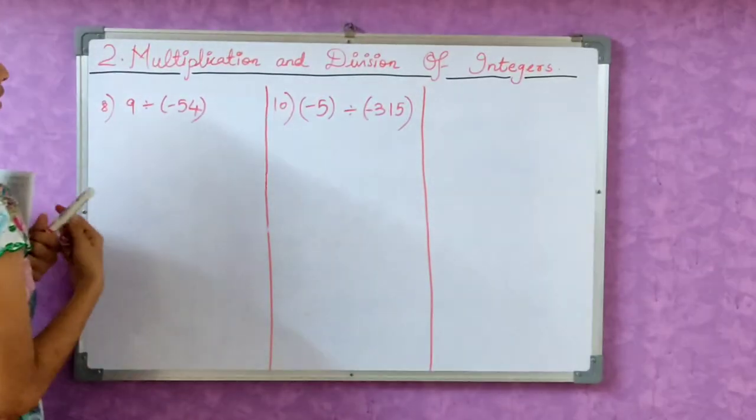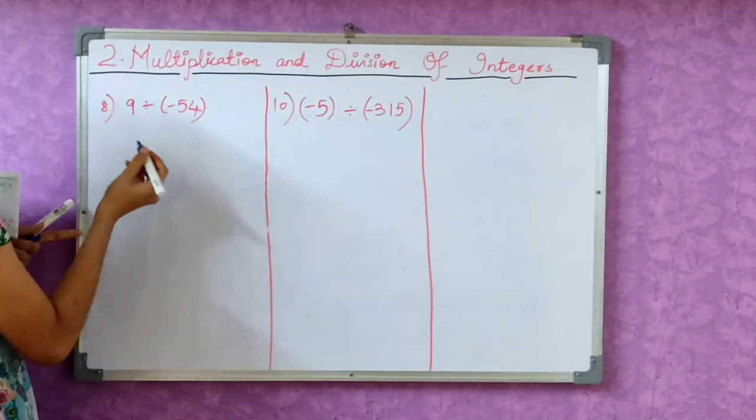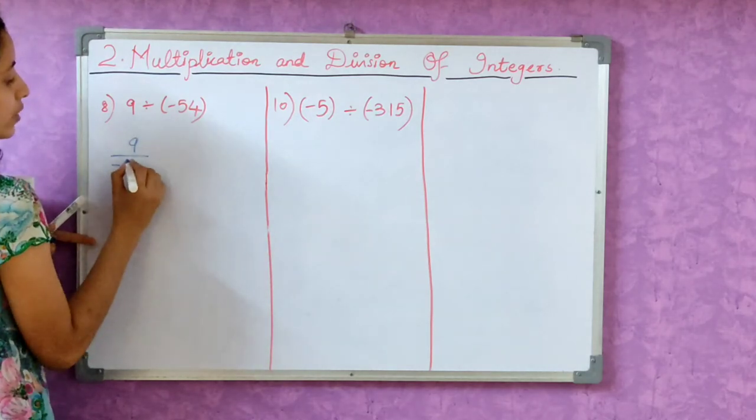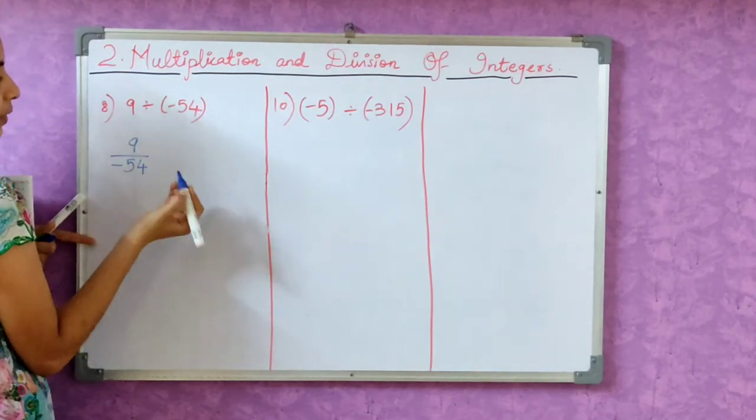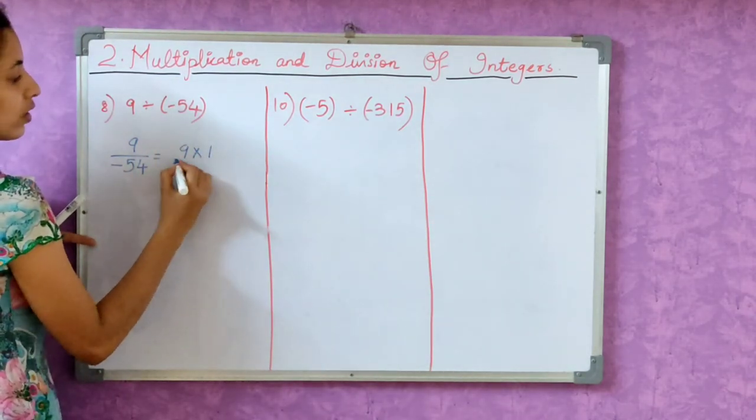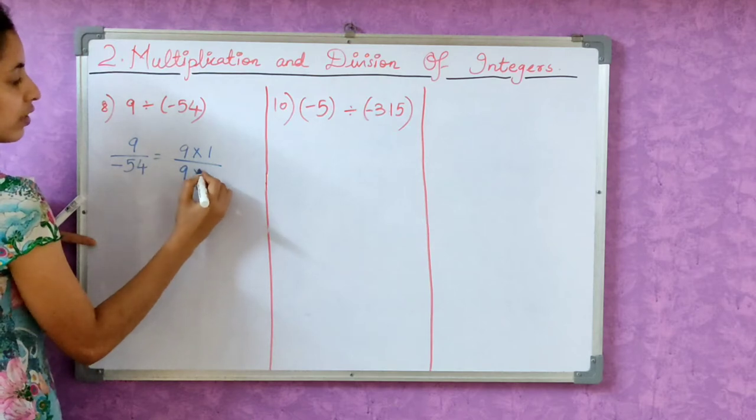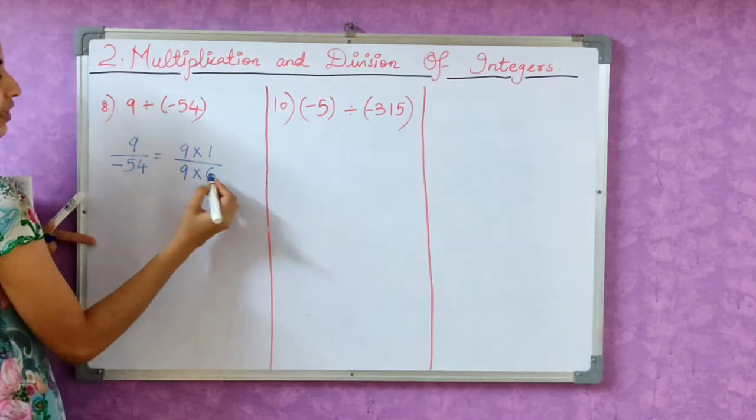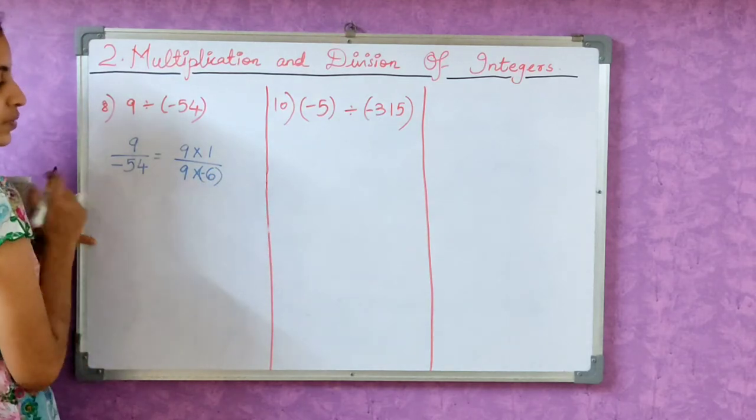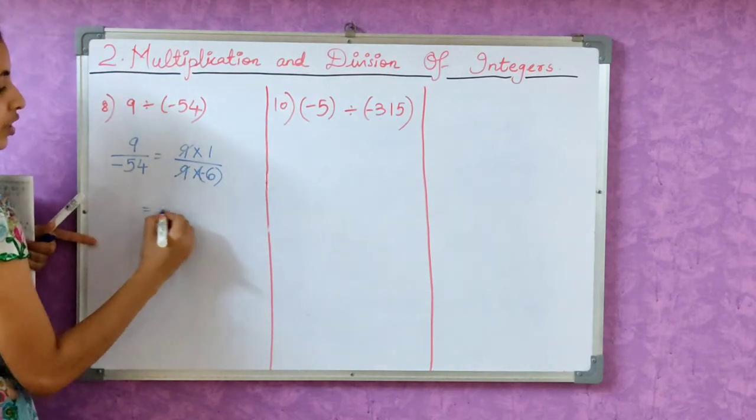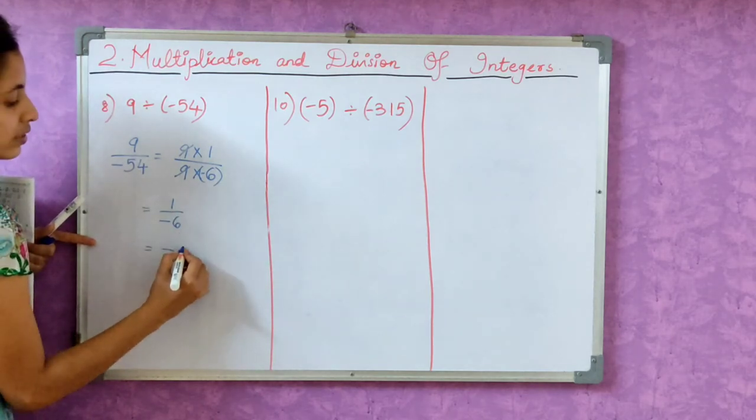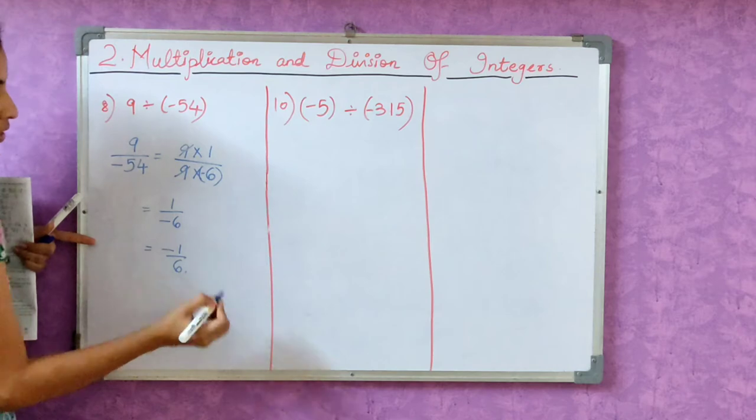Now let's see the 8th one. 9 by minus 9 divided by minus 54. Here our small number is on top this time, but it doesn't make any difference. 54 comes in the 9 table, correct? So 9 ones are 9, and below what is it? 9 sixes, yes, not even 6, it's minus 6. 9 sixes is minus 54. 9 and 9 cancel. What remains on top? 1. Below minus 6. So our answer is minus 1 by 6.